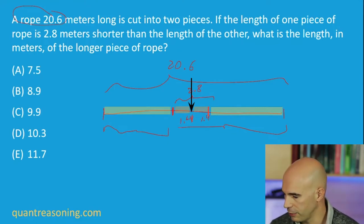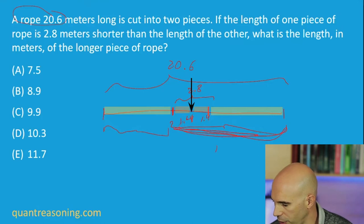And what's the question asking for? It's asking for this length. So we know half was 10.3, and we have another 1.4. And so the answer is 11.7.